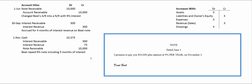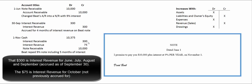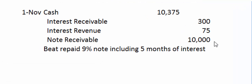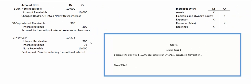The last journal entry: he writes us a check for $10,375. Cash is an asset, assets increase with debits. We take the interest receivable off our books — we already booked that interest revenue for June, July, August, and September, four months. Another month has gone by since we last accrued, so we book $75 worth of interest revenue for October, and take that receivable off our books. Note receivable is an asset — it increases with debits and decreases with credits. We make a memo noting that Deadbeat repaid his 9% note including five months worth of interest. The $300 represents already-booked interest revenue, and the $75 represents one month's interest for October that we had not yet accrued.